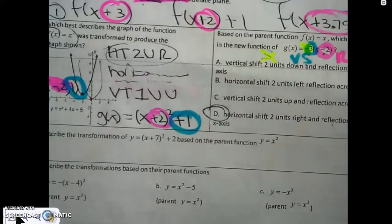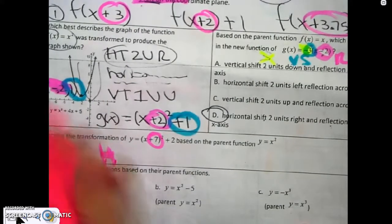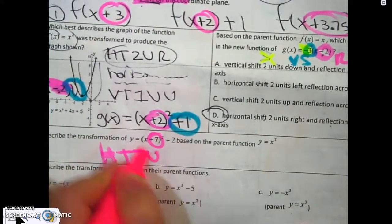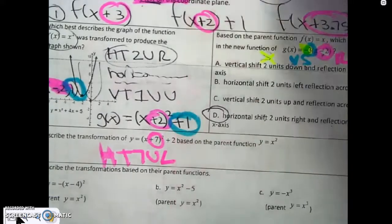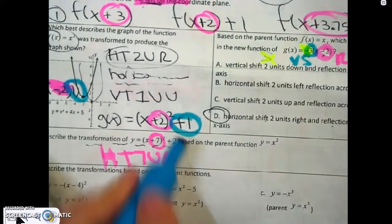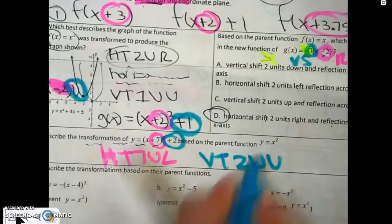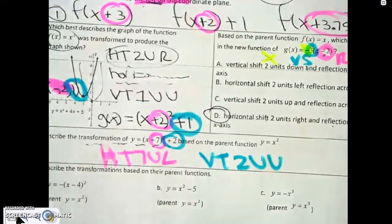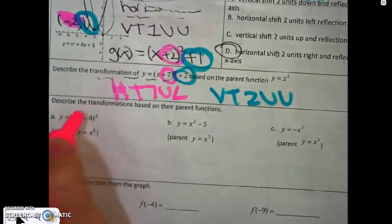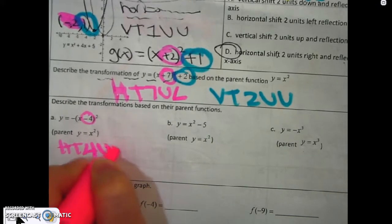Let's go to the next one — describe the transformation. It's with a 7, so: horizontal translation seven units left. Remember, it's the opposite for x. And then a vertical translation two units down.